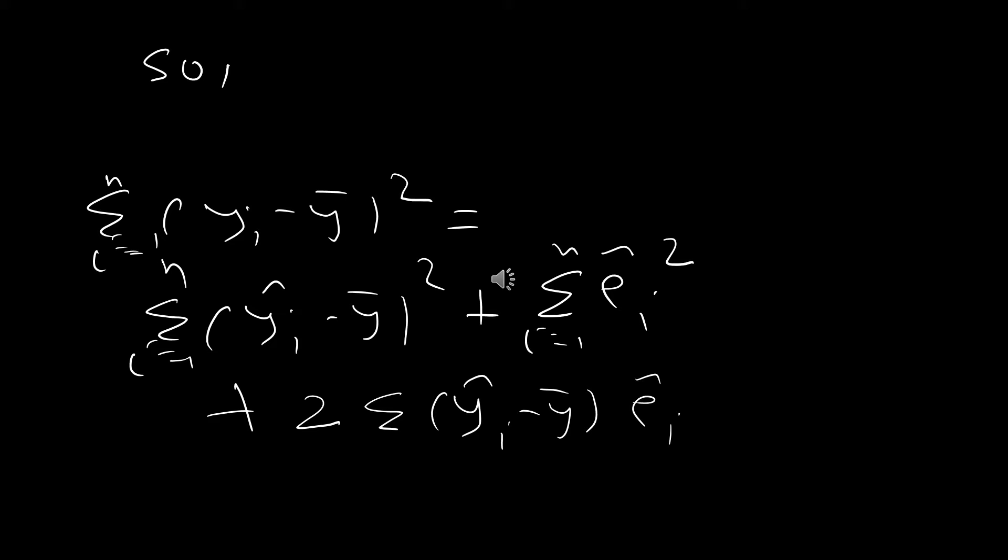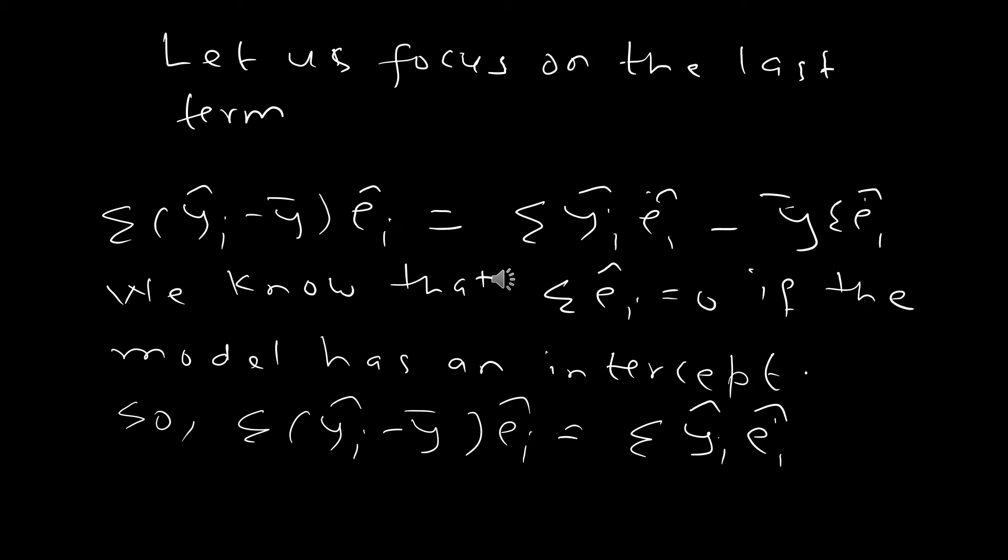Think of summing yi minus y_bar squared on the left-hand side. If you sum the left-hand side, then the right-hand side becomes — remember the formula (a+b)² which is a² plus 2ab plus b². Here a is y_hat_i minus y_bar, so a² summed becomes summation of (y_hat_i minus y_bar)². And b is e_hat_i, so b² summed becomes summation of e_hat_i². The 2ab term summed over is 2 times summation of (y_hat_i minus y_bar) times e_hat_i.